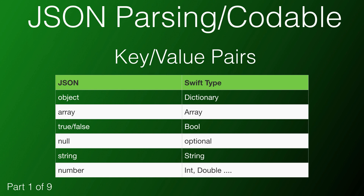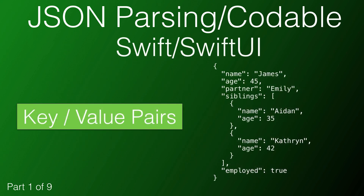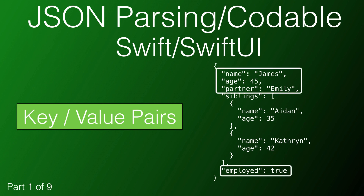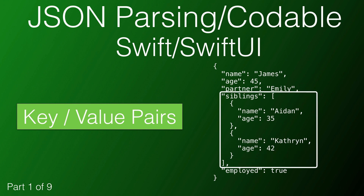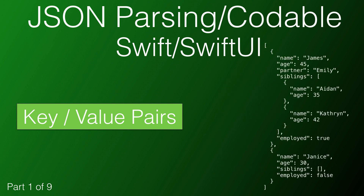Before we get into the meat of the series, let's just first take a look at a couple of simple JSON structures. This one contains some key-value pairs where the values are basic types like a string and an int, and one more where the values are an array of objects containing two key-value pairs. We can create another object of this same type and create an array. This, too, is valid JSON.